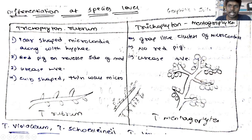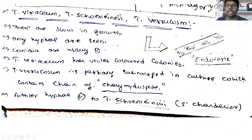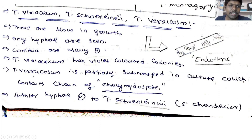Among the remaining Trichophyton species: T. violaceum will produce a violet color on the back side of the medium. T. schoenleinii can be identified by the presence of endothrix and antler hyphae. T. verrucosum can be identified by the presence of chlamydospores — which are vegetative spores.